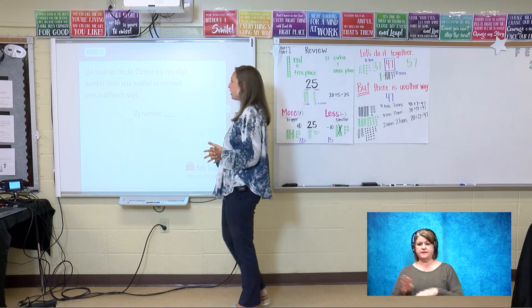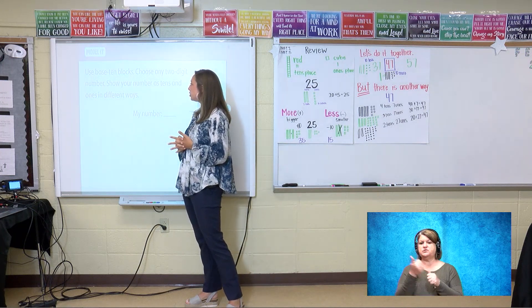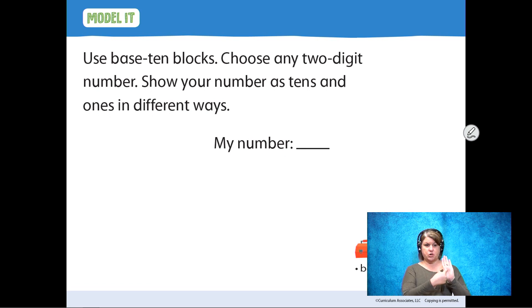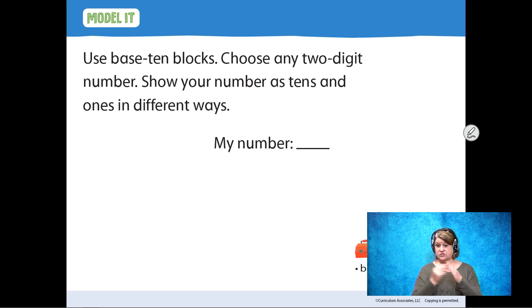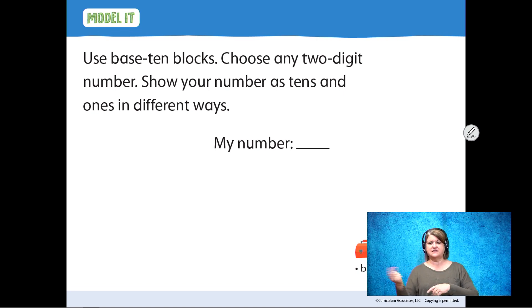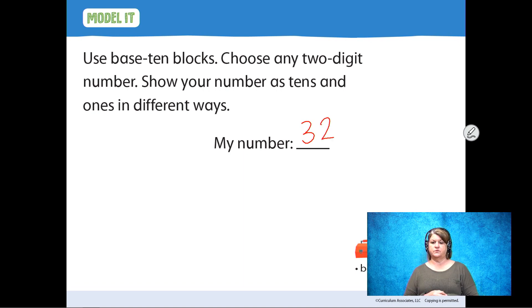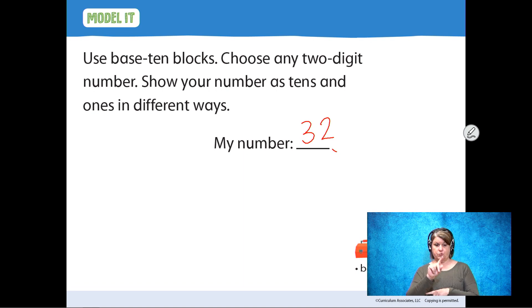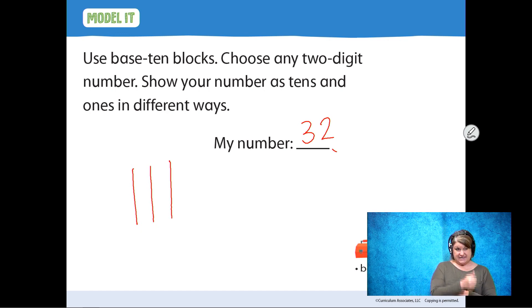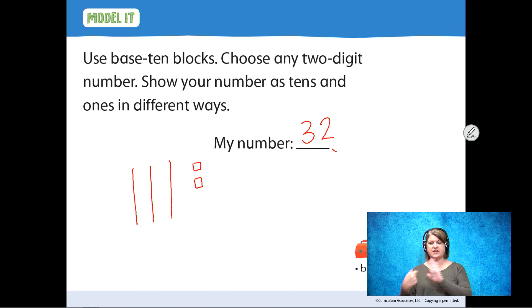Use base 10 blocks. Choose any two-digit number. Show your numbers as tens and ones in different ways. Like I did last lesson, you could use your cards, your dominoes, or your dice. Today I'm going to use my dice to get my two-digit number. I have a three and a two, so my whole number is 32. I have a three in the tens place and a two in the ones place. Let's do it the simplest way first with our three tens and our two ones. There's one way to show your number as tens and ones.